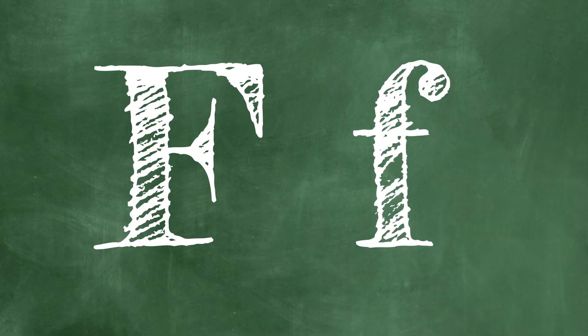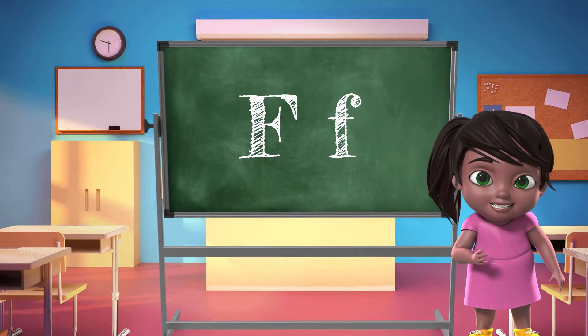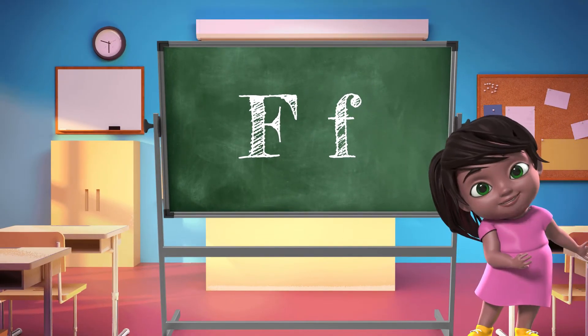Last time we looked at the first five letters. Let's learn the next five letters. The sixth letter of the alphabet is F. The first one is an uppercase and the second one is a lowercase. Now we are going to learn a few things that begin with the letter F.